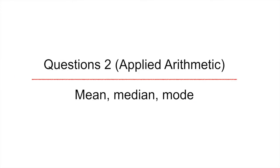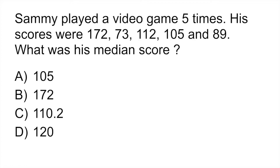Question 2 is from the applied arithmetic portion. Mean, median, and mode. Sammy played a video game 5 times. His scores were 172, 73, 115, 12, 105, and 89. What was his median score?